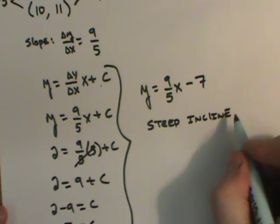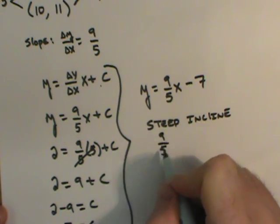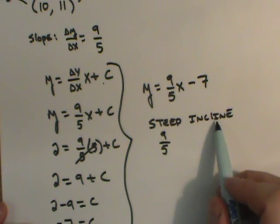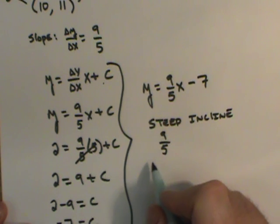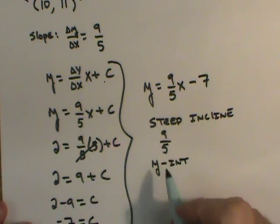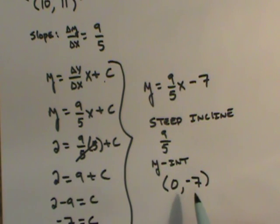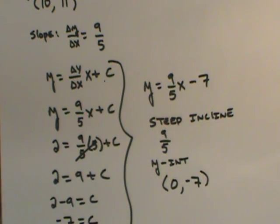Again, because my slope was 9 fifths, improper fraction means that it's steep. And because it's positive, it's an incline. The y-intercept, always listed as an ordered pair. So I can go 0 and I just take this number, negative 7. That means it will intercept the y-axis 7 units beneath the origin.